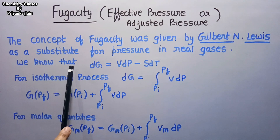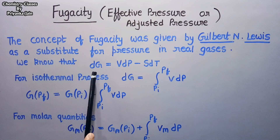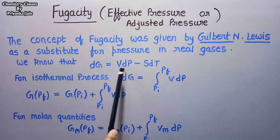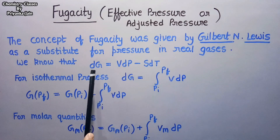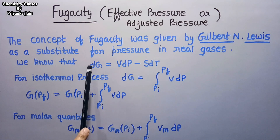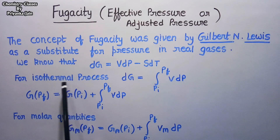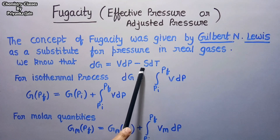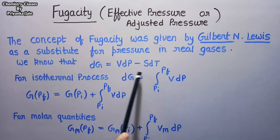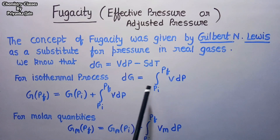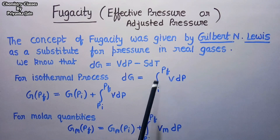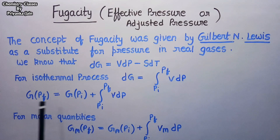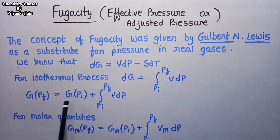We start with the Gibbs free energy. The differential form of the Gibbs free energy is given by dG = VdP − SdT. If we want to see the variation of Gibbs free energy with pressure, we take the process as an isothermal process, meaning when temperature remains constant. In this case the temperature term becomes zero, and after integrating between two pressures — the final pressure and the initial pressure — this equation takes the following form.